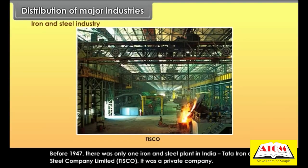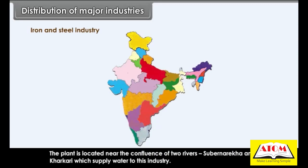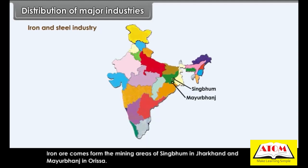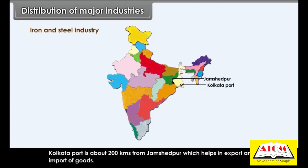Before 1947, there was only one iron and steel plant in India — Tata Iron and Steel Company Limited (TISCO), a private company. TISCO's locational advantages include its location near the confluence of the Subarnarekha and Karkari rivers for water supply. Iron ore comes from Singhbhum in Jharkhand and Mayurbhanj in Orissa, coal from Raniganj and Jharia mines, manganese from Kendujhar district, and Kolkata port is about 200 km away, aiding export and import.